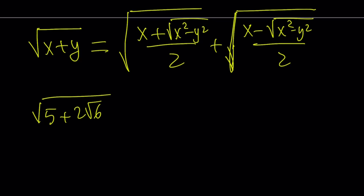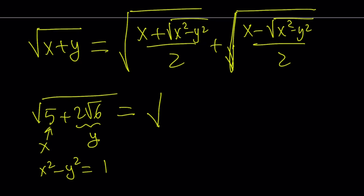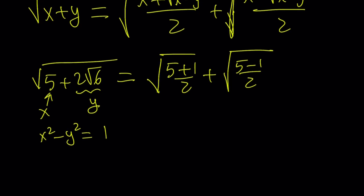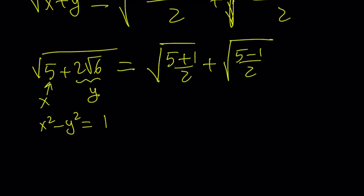Let's apply this to a couple of situations. For example, if I have something like the square root of 5 plus 2 root 6, I can easily apply the formula. In this case, x is 5 and y is 2√6, or equivalently y squared is 24. I evaluate x squared minus y squared: that's 25 minus 24, which is 1. So from here I can write this as the square root of (5 plus 1) over 2 plus the square root of (5 minus 1) over 2. This gives us square root of 3 plus square root of 2.